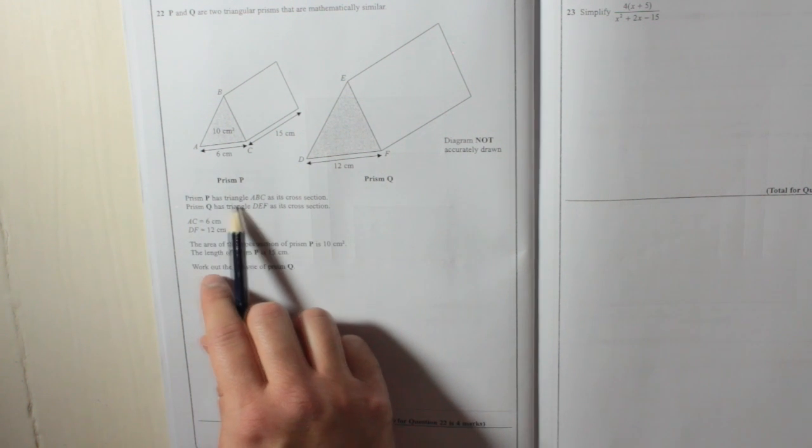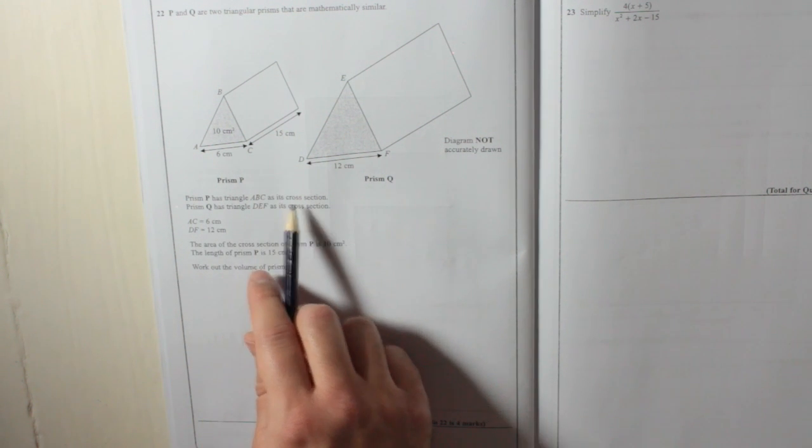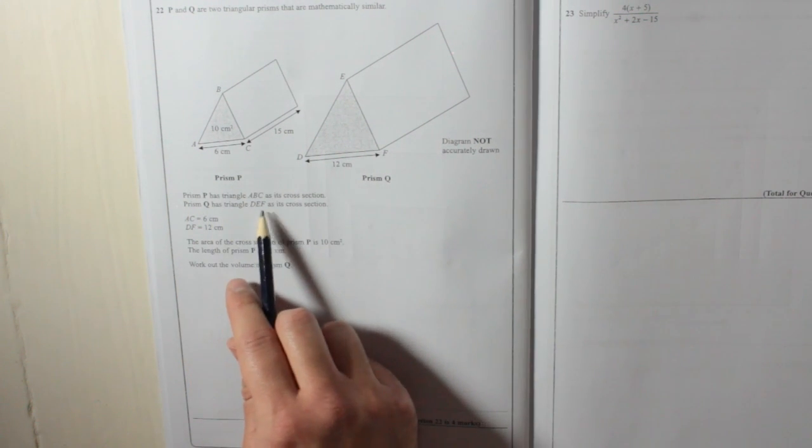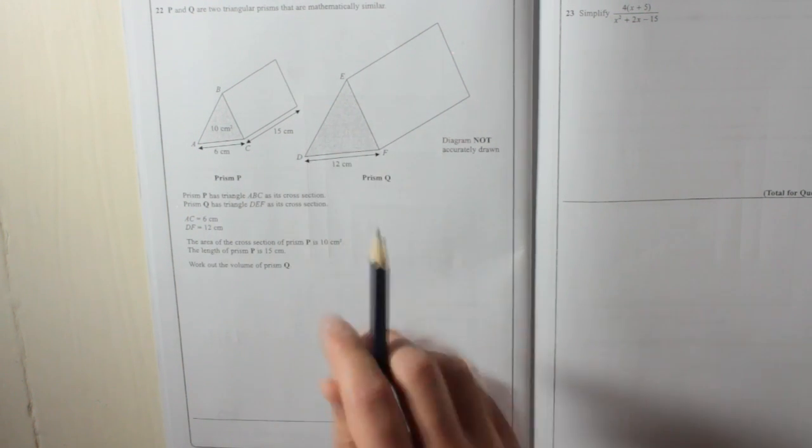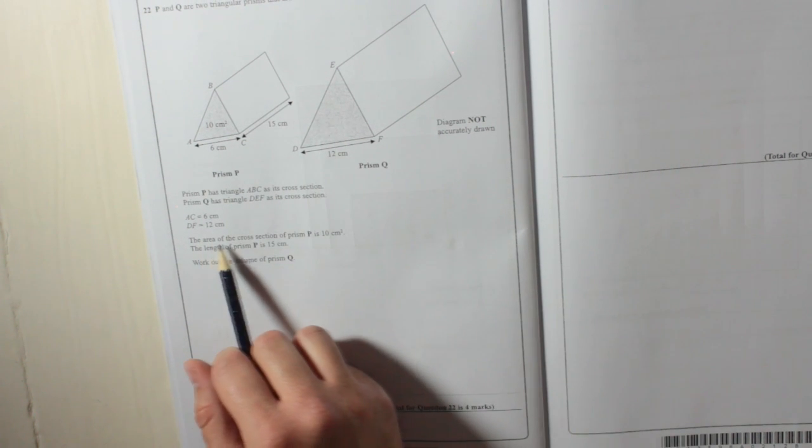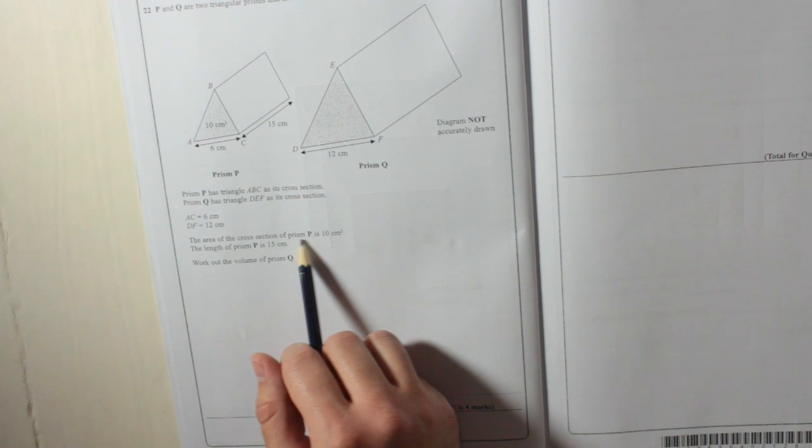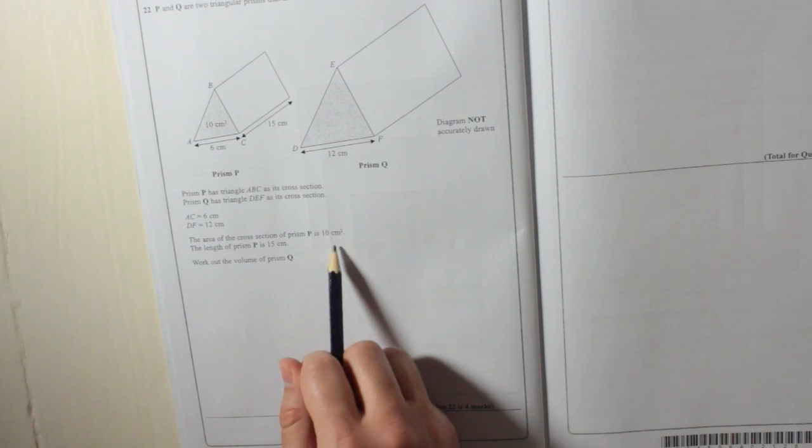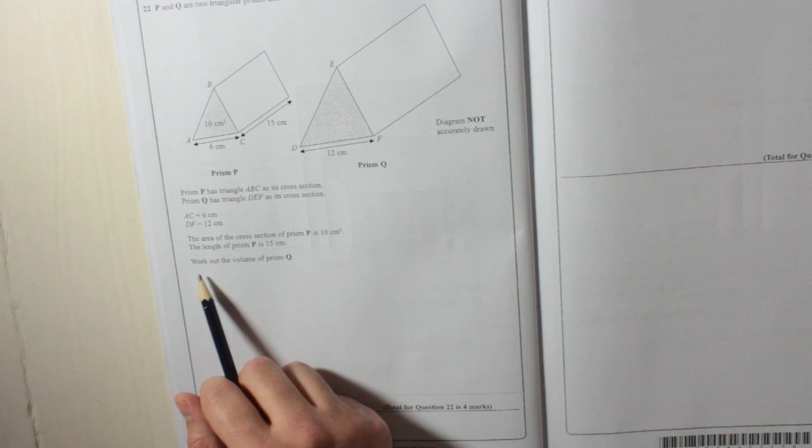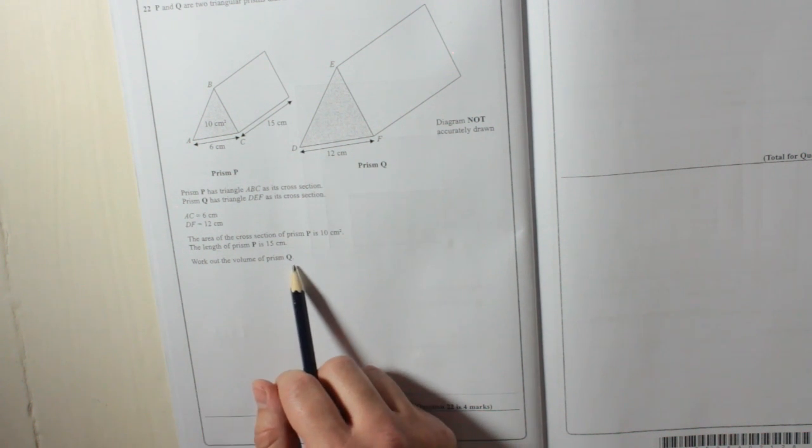Prism P has triangle ABC as its cross-section, so ABC. Prism Q has triangle DEF as its cross-section, DEF. AC is 6, DF is 12. The area of the cross-section for prism P is 10cm², as it tells you. The length of prism P is 15cm. Work out the volume of prism Q.